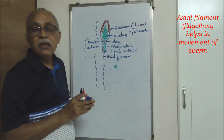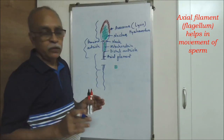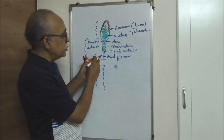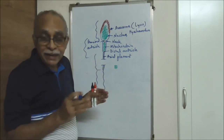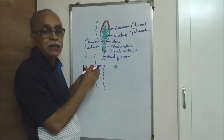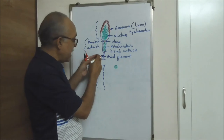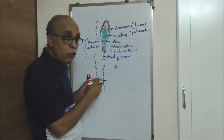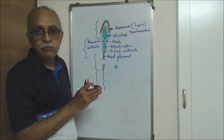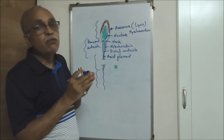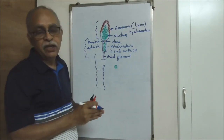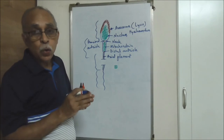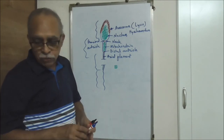The axial filament is essentially a long flagellum that continues down to the end piece, and this is the one which enables the sperm to move. The sperm needs to move because the place of release and the place of fertilization are different, so it must travel from the place of release to the place of fertilization. So the mobility of the sperm is because of the axial filament, the tail, and the end piece. Every part has a specific function — that's about the typical structure of the sperm.